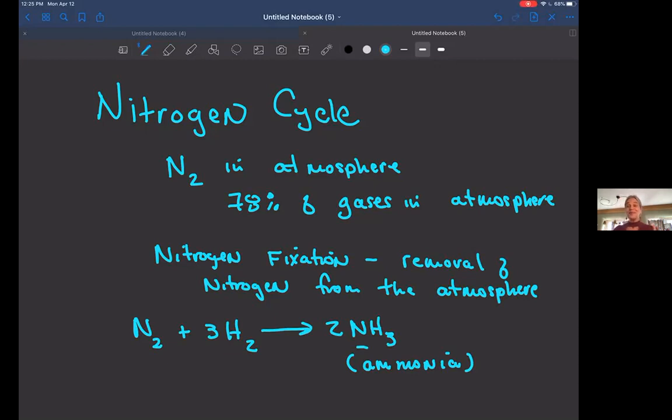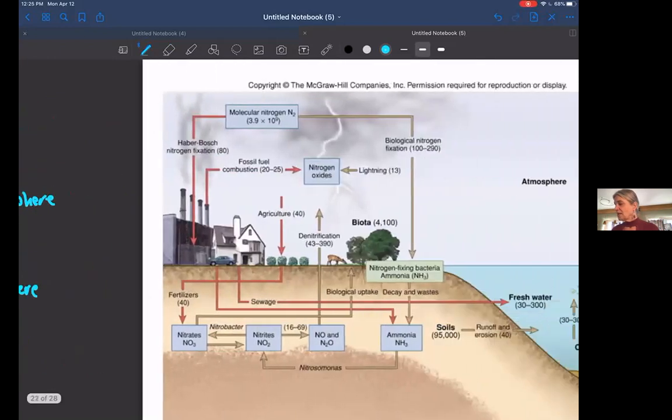Now the forms of nitrogen, there's actually a variety of forms. We have ammonium, ammonia, nitrite, and nitrate. These are different forms of nitrogen, and it's really important because that is how plants get their nitrogen through inorganic forms. They take it up from the soil, able to absorb that nitrogen from the soil.